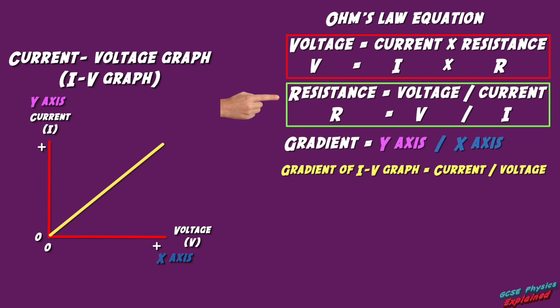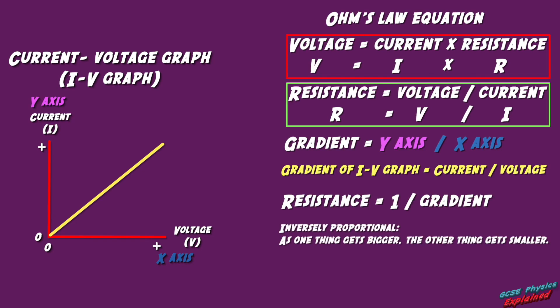What that means is that the gradient and the resistance are inversely proportional, which means if one thing gets bigger, the other thing gets smaller. It's like they're opposites.